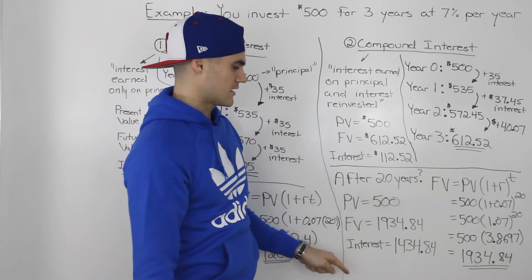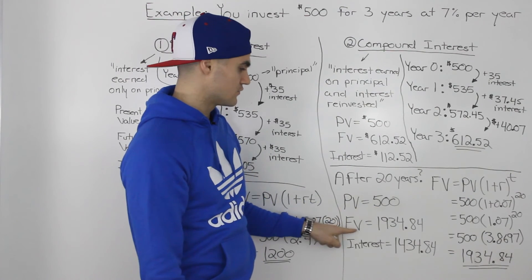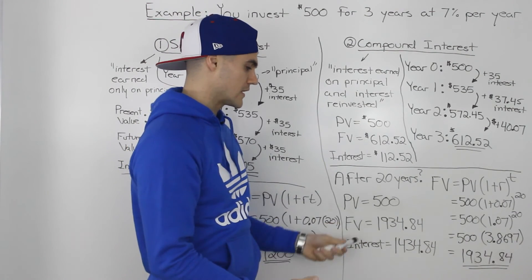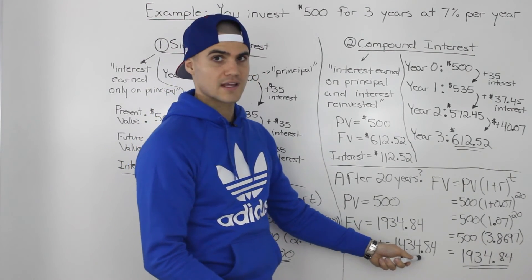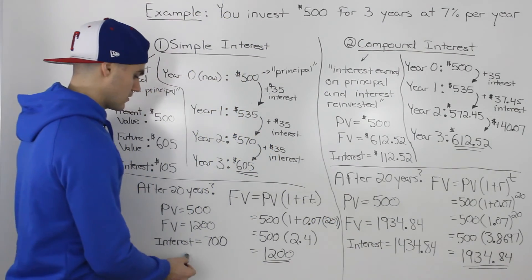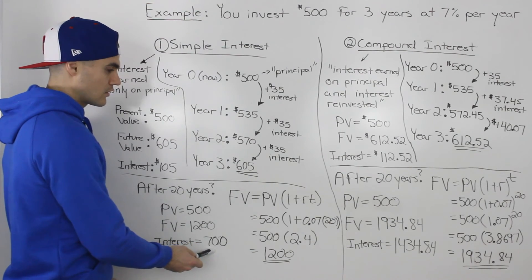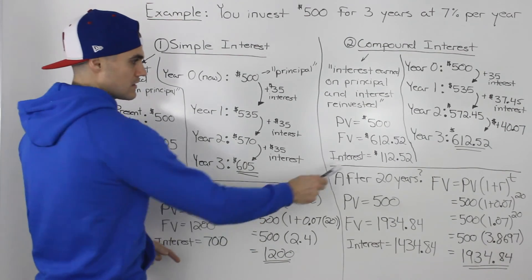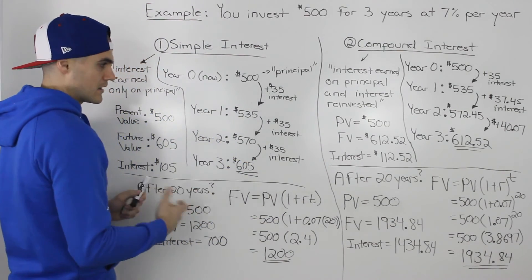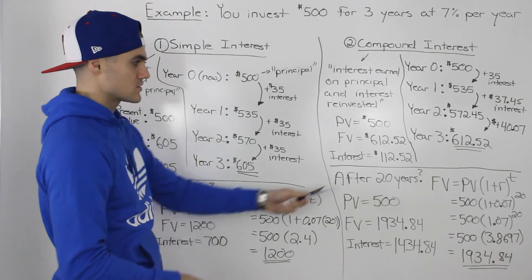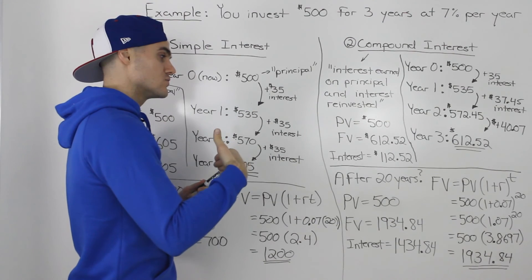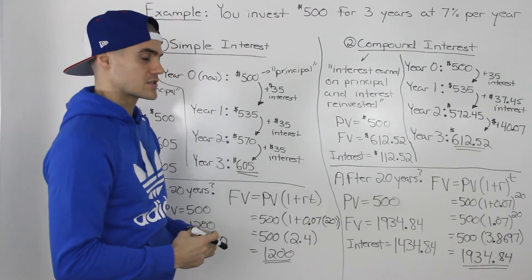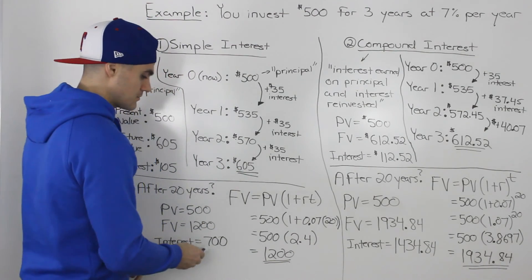Summarizing: present value is $500, future value is $1,934.84, so the interest earned over 20 years was $1,434.84 — notice how much bigger that is than $700 with simple interest. After three years the difference was small — $105 vs $112.52 — but as you increase the time horizon, the difference between simple and compound interest gets larger and larger.